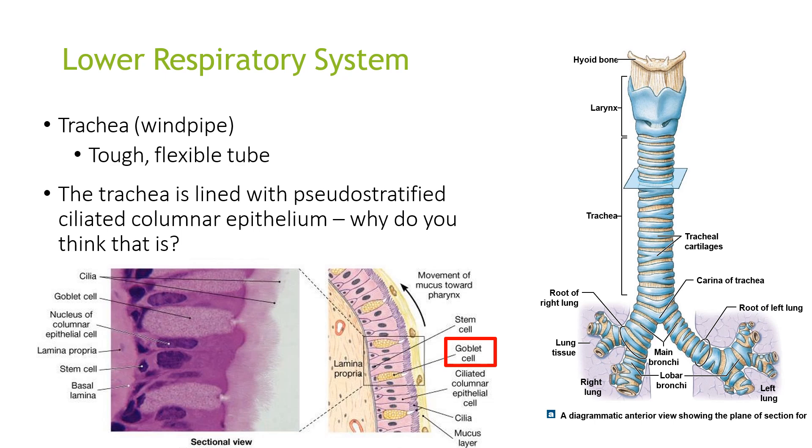You have the trachea, also called the windpipe, which is a tough, flexible tube. The trachea is lined with pseudostratified ciliated columnar epithelium.